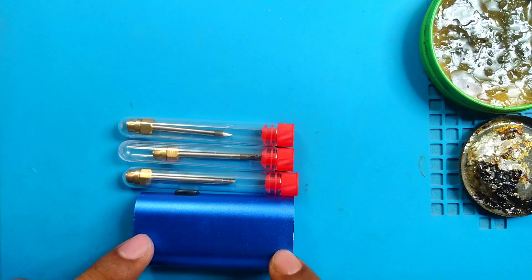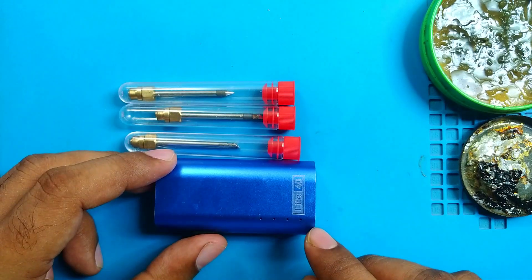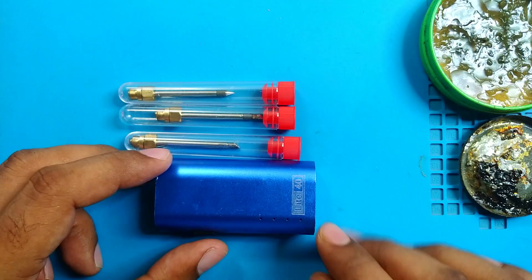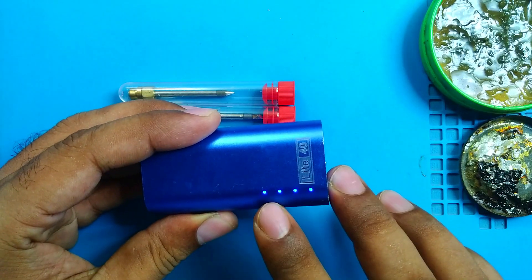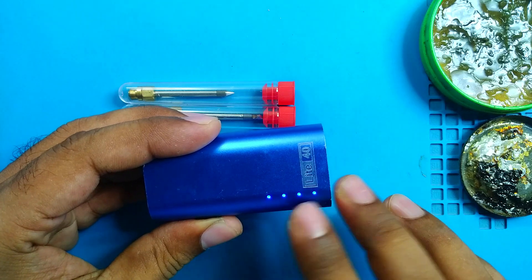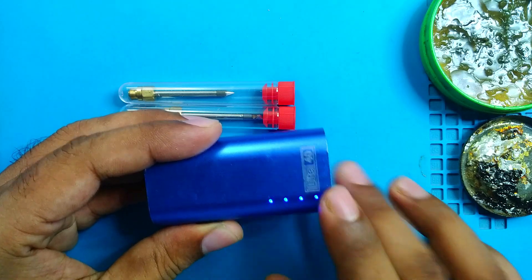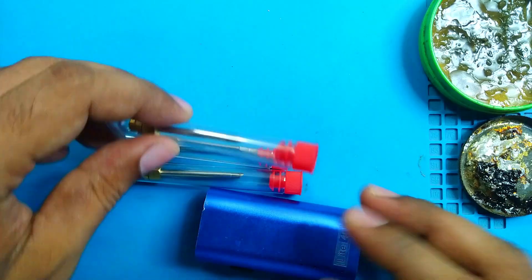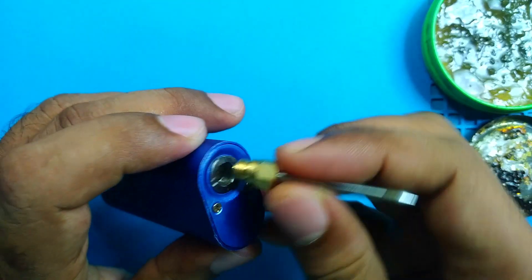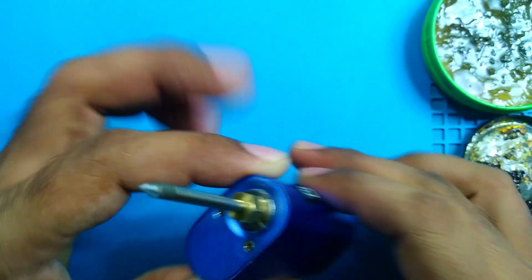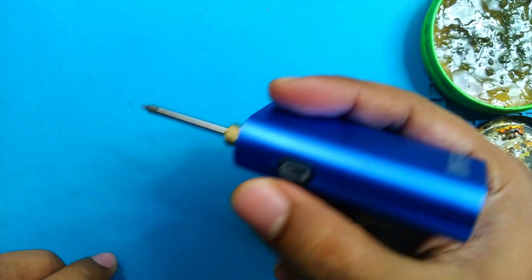So now we will check how it performs. The operation is very simple. At first, if we press this button, it shows the battery charging level. Now four LEDs are glowing - that means the battery is fully charged. We have to screw this tip into the holder. Okay, done. Now we have to press and hold this button - the tip will be hot enough for soldering.